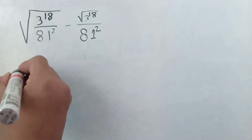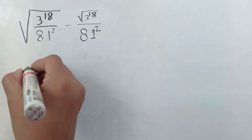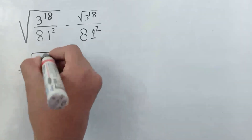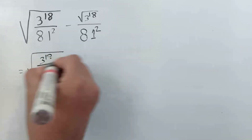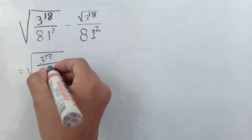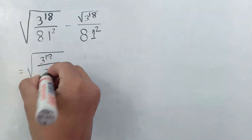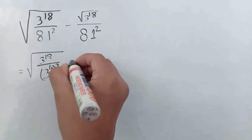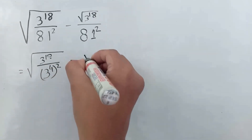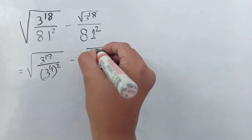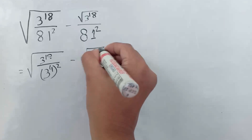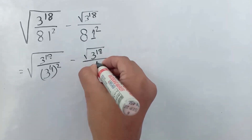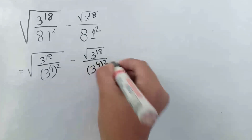Let me show you how you can solve it. The first one is square root of 3 to the power 18 by 81 squared. We can write it as 3 to the power 4 squared, and similarly the second one — square root of 3 to the power 18 by 81 squared — we can also write it as 3 to the power 4 squared.